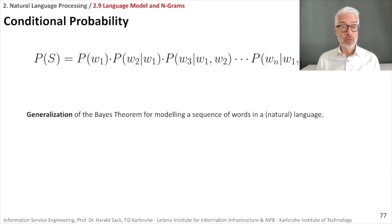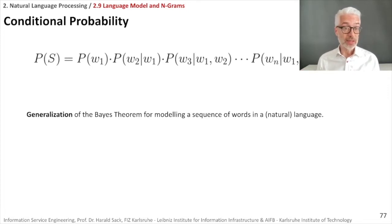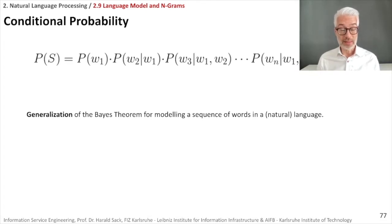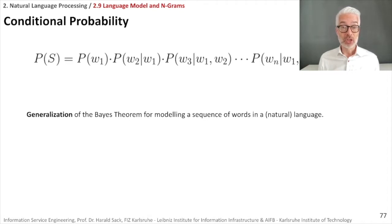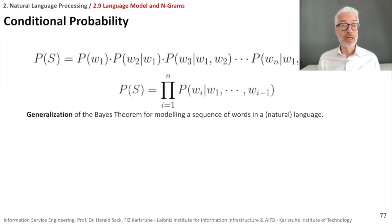In the last section of the lecture, we derived the probability of a sentence, which equals the probability of a sequence of words. Thanks to Bayes' theorem and the chain rule, this equals the probability of the first word times the probability of the second word given the first, times the probability of the third word given the first two, and so on — up to the probability of word n given all preceding words from word one to word n minus one.